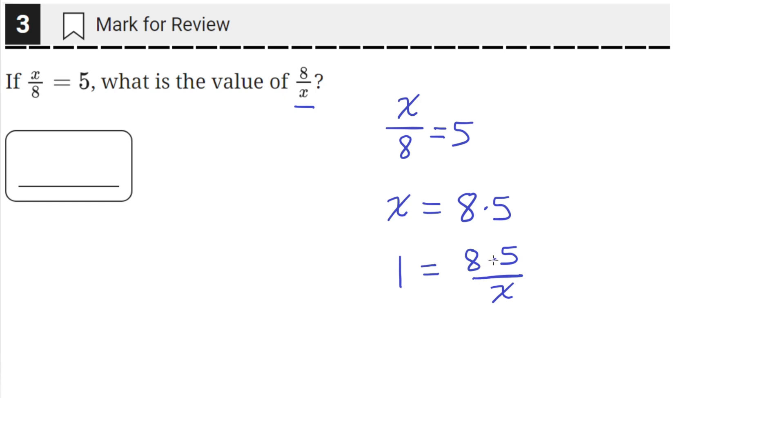So this is looking very similar to this, but there's this 5 here. So to get rid of this, we'll just divide both sides by 5.